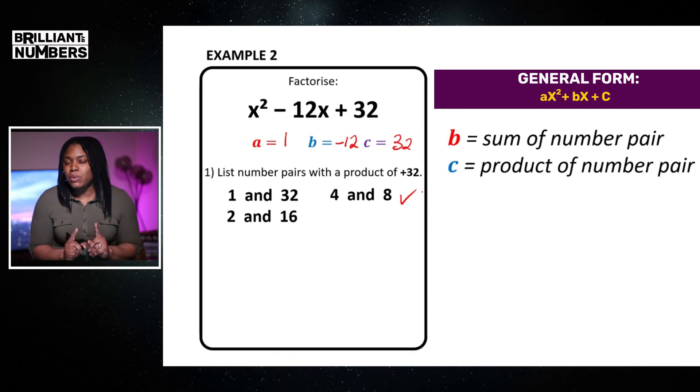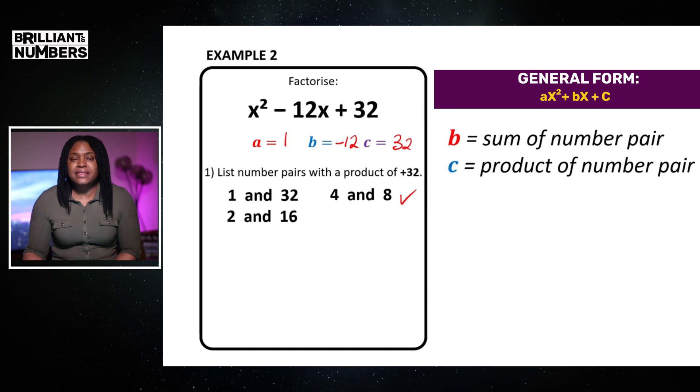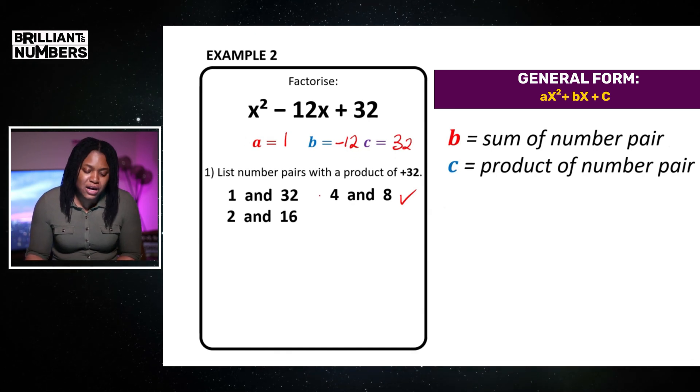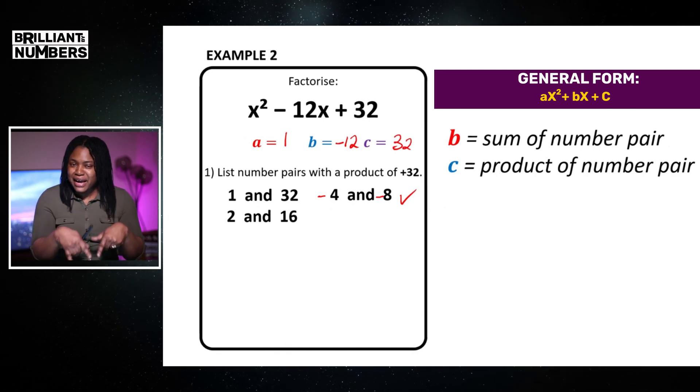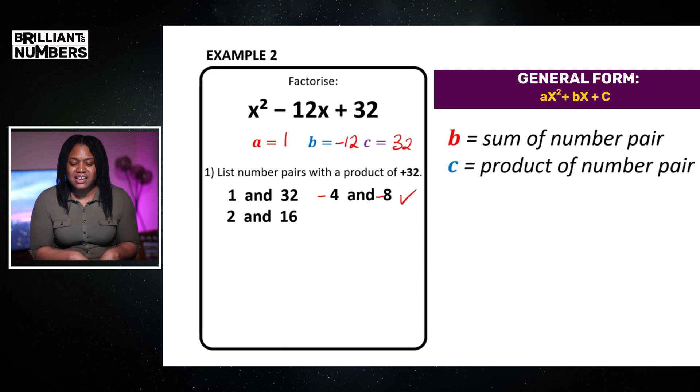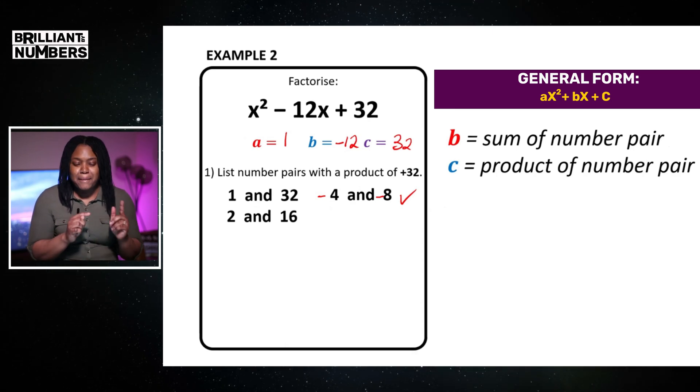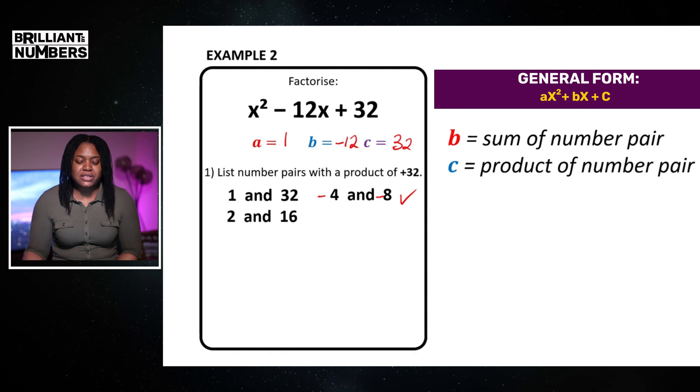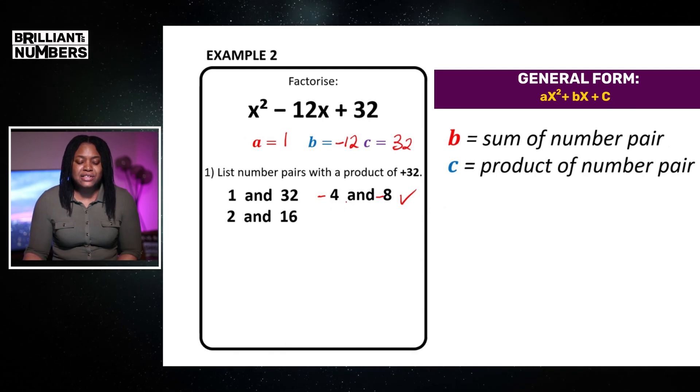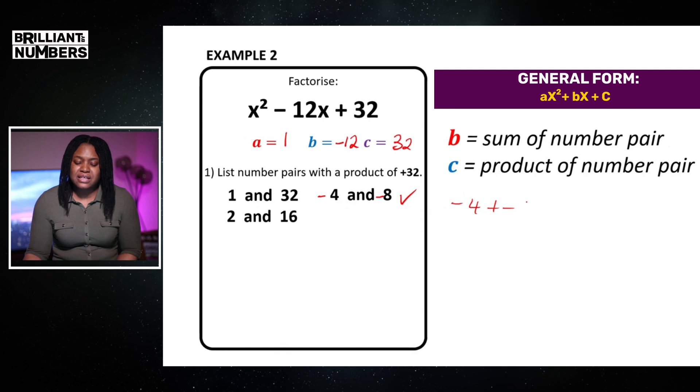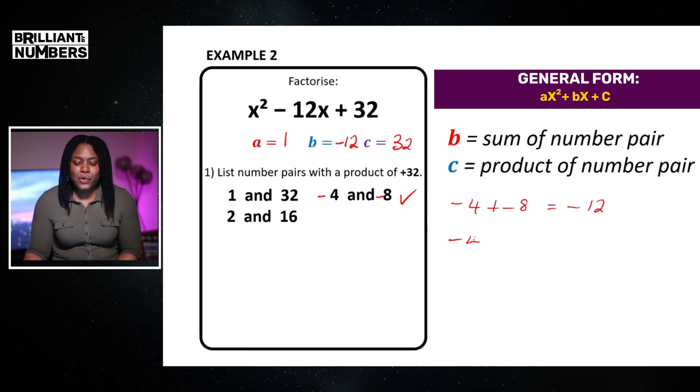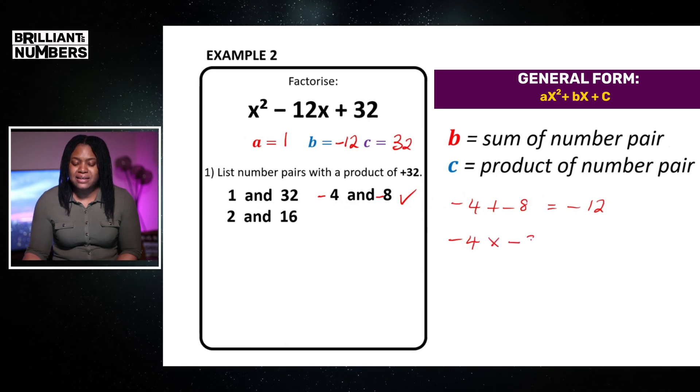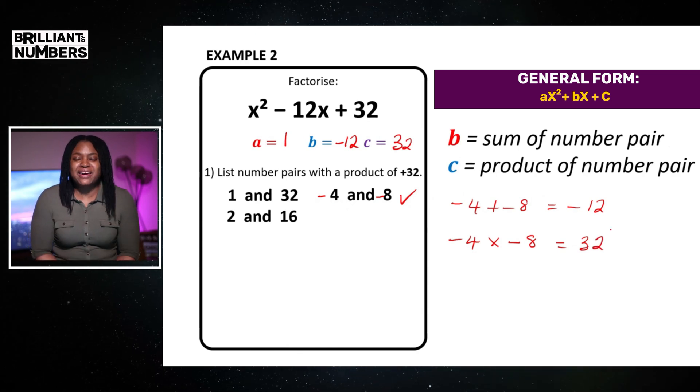However, we want them to add to negative 12. This means that both our numbers have to be negative. Now, remember, from the factor pairs we have investigated on the previous slide, we recognize that multiplying two negative numbers give a positive. So, here, minus 4 add minus 8 is equal to minus 12 but minus 4 multiplied by minus 8 gives a positive 32. So, we have found our pairs.